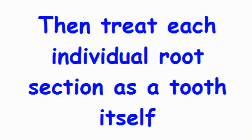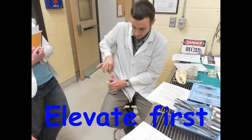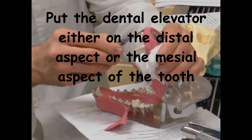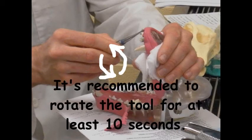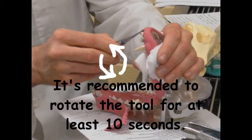But I pity the fool! Don't use a dental excavator! Treat each individual root section as a tooth itself. Remember, elevate first, not pull. Put the dental elevator either on the distal aspect or the mesial aspect of the tooth. Then you rotate the tool until the pressure breaks the periodontal ligament. It is recommended to rotate the tool for at least 10 seconds. Then you yank that son of a boop out!